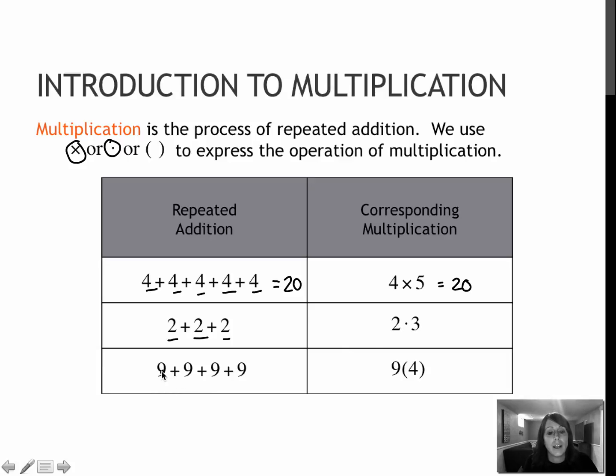And on nine plus nine plus nine plus nine, which is nine four times, is nine times four. Notice on this one, I'm using the parentheses. So when we have two values written next to each other in parentheses, that also means multiplication.